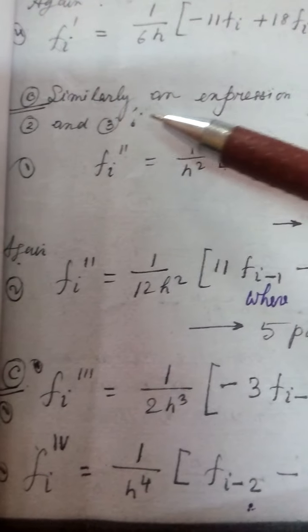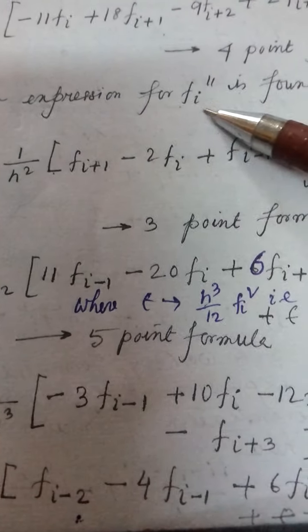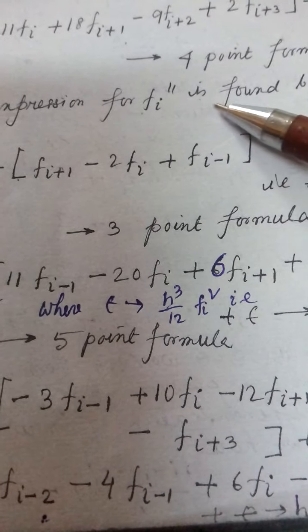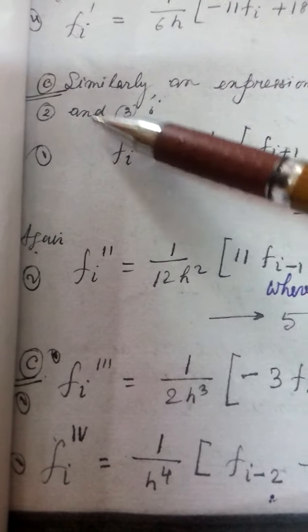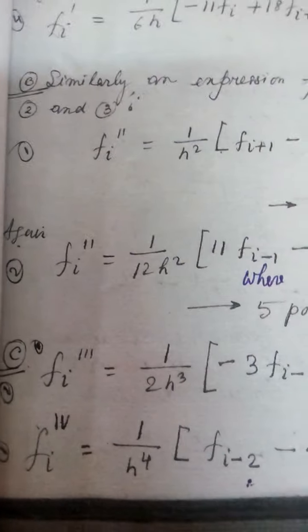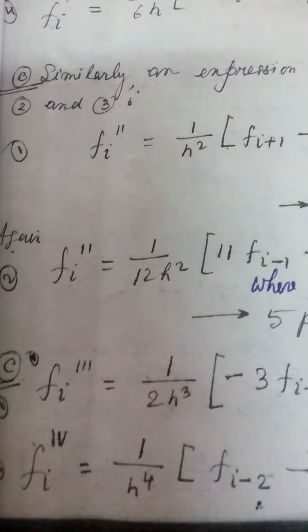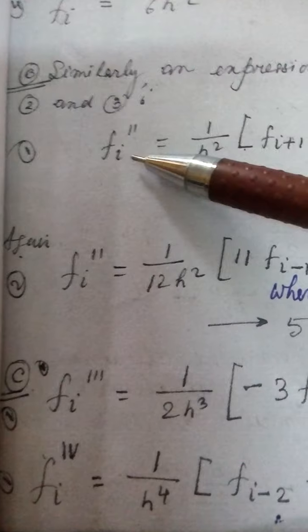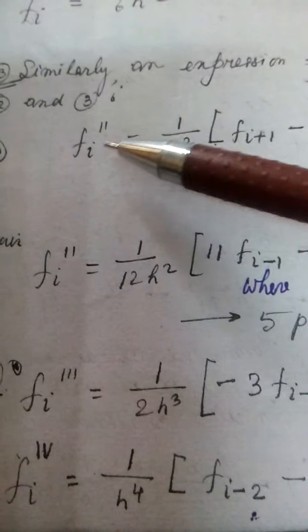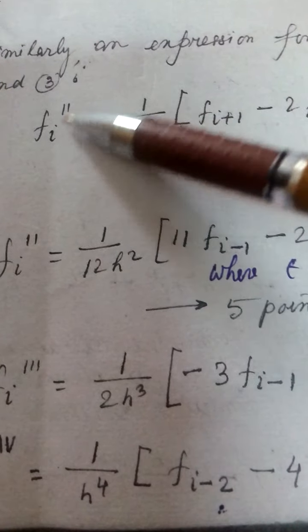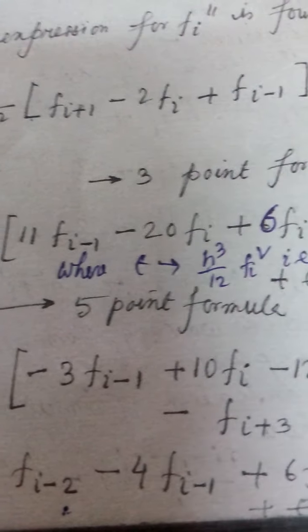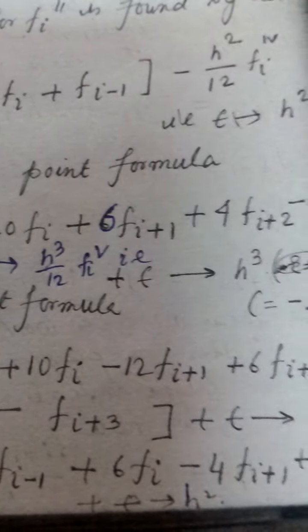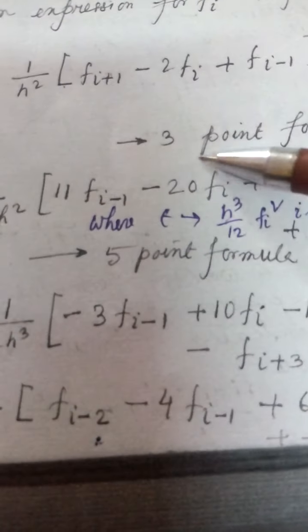The expression for f i second derivative is found by adding two and three, different types of combination of 1, 2, 3, 4. You will get the different formula. Of course these are four formulas. This is f i double dash. So this is the formula, plus error. This is three point formula.